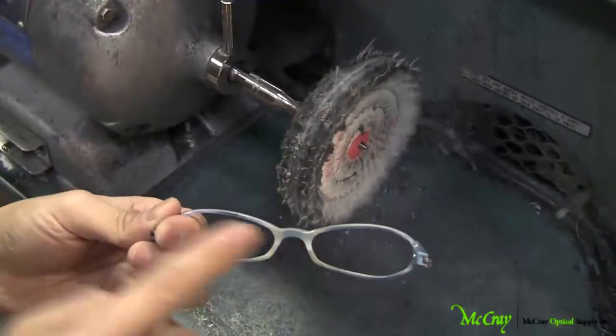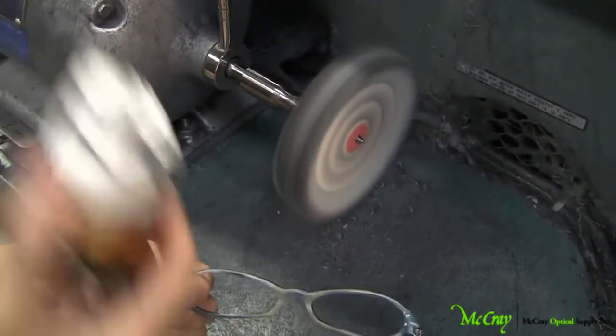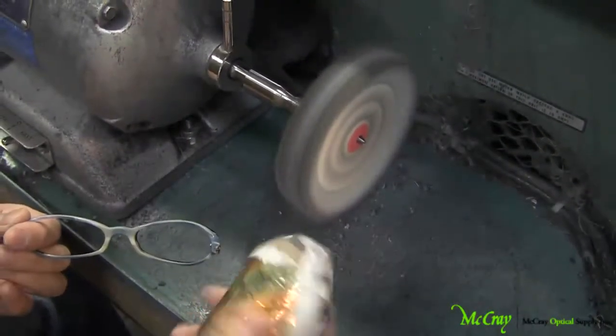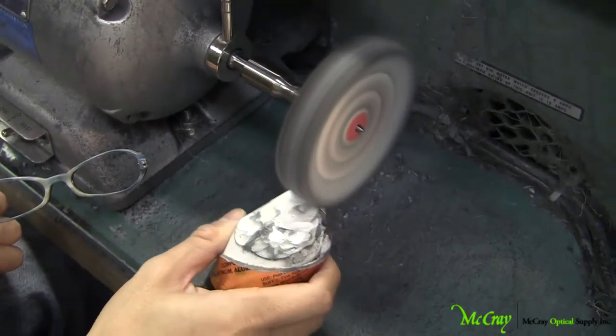Now, we're going to apply with an actual large buffing wheel. The large buffing wheel, again, you have to use the wax compound. And this will just, again, make it that much shinier and bring out that luster in the frame.